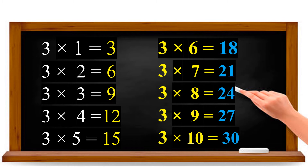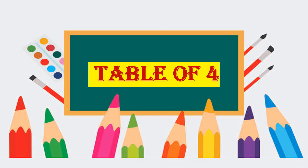Shall we say the 3 table once more? Table of 3. 3 ones are 3. 3 twos are 6. 3 threes are 9. 3 fours are 12. 3 fives are 15. 3 sixes are 18. 3 sevens are 21. 3 eights are 24. 3 nines are 27. 3 tens are 30.